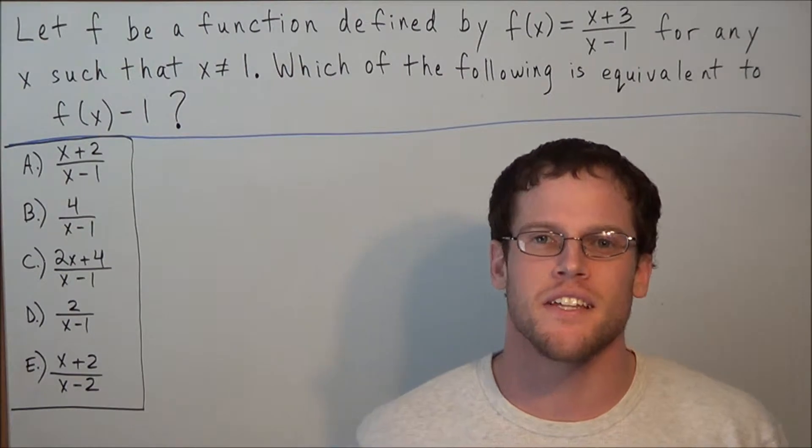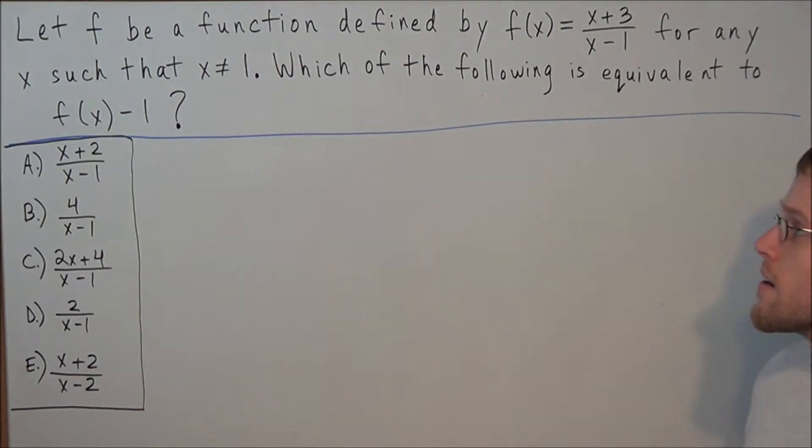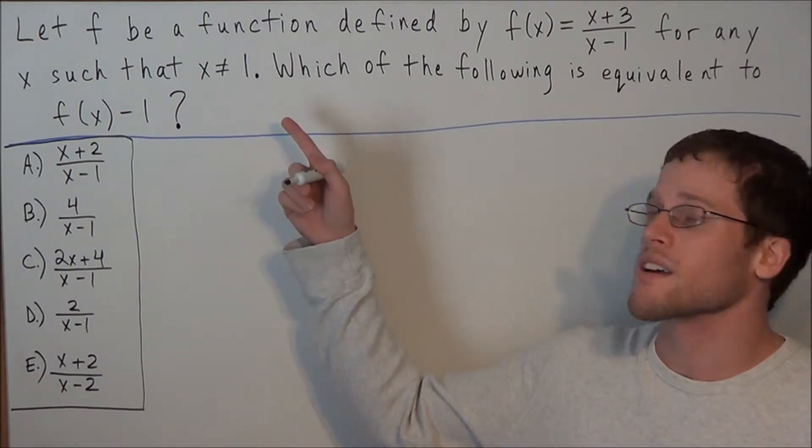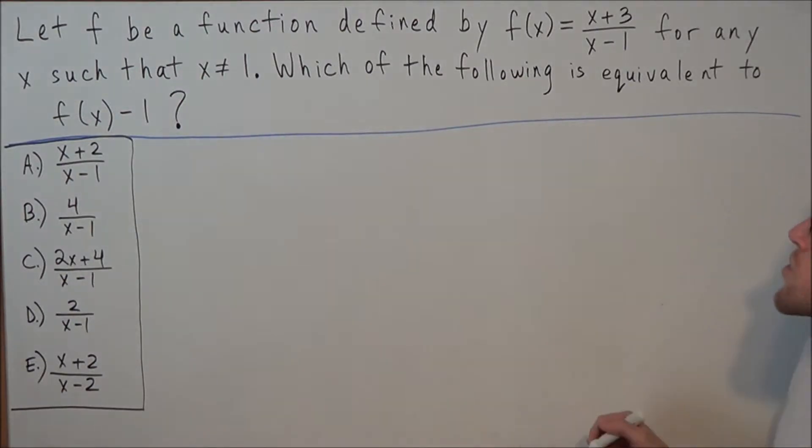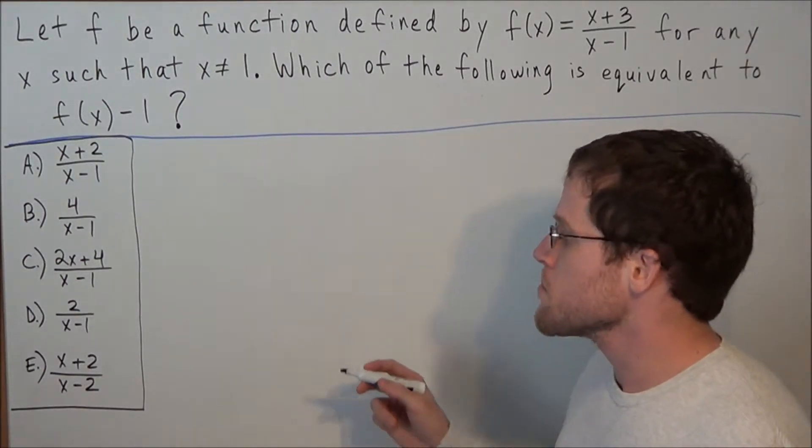Hi, my name is Mr. D, and today I want to take a look at an SAT function problem. Let f be a function defined by f(x) equals x plus 3 over x minus 1 for any x such that x does not equal 1. And we're trying to find which of the following is equivalent to f(x) minus 1.